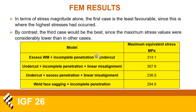Maximum stress levels ranged from 237 to 314 MPa, with the first model being the worst and the third one being the best. This would suggest that one of the misalignment models was actually the best and that the versions without misalignments were the worst case scenario. However, the truth was a bit different.